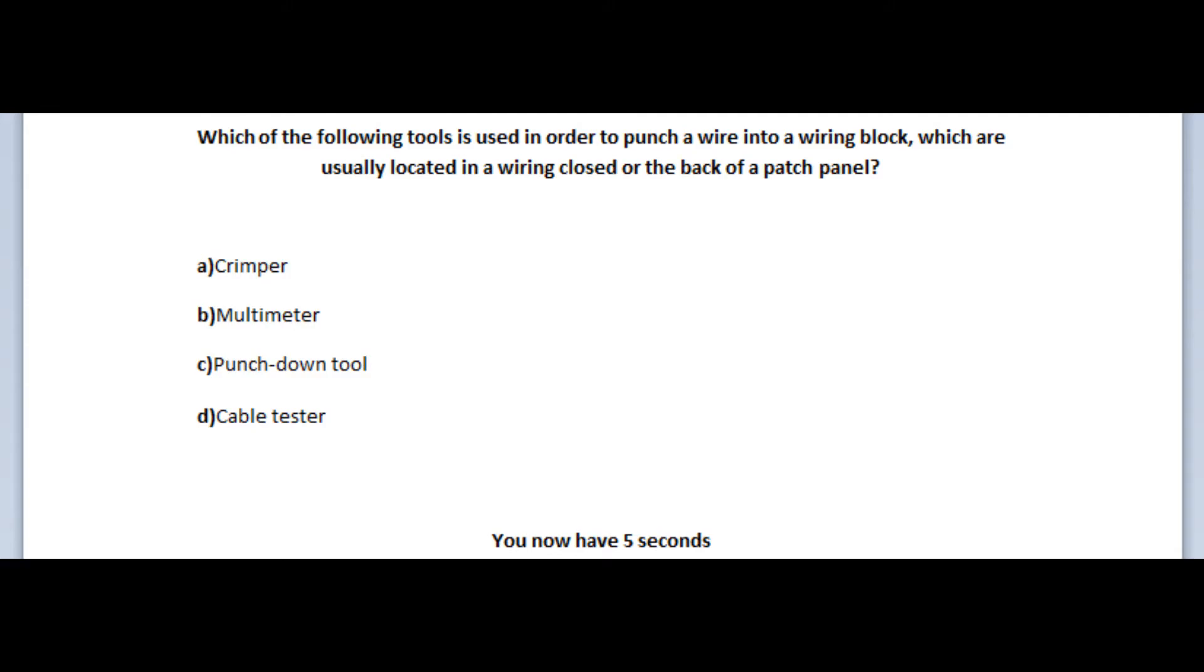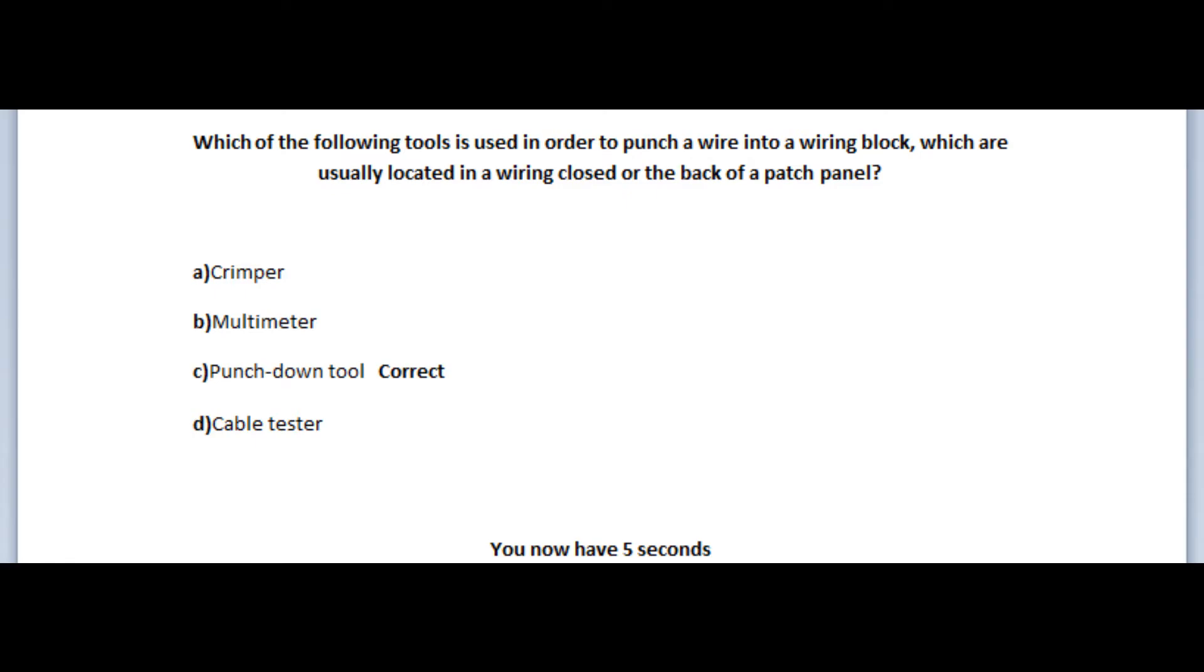Let us now try an easier question and you will already be familiar with what these following tools are used for. The next question states: which of the following tools is used in order to punch a wire into a wiring block, which are usually located into a wiring closet or the back of a patch panel? Is it A, a crimper? Is it B, a multimeter? Is it C, a punch-down tool? Or is it D, a cable tester? It should be obvious. You now have 5 seconds.